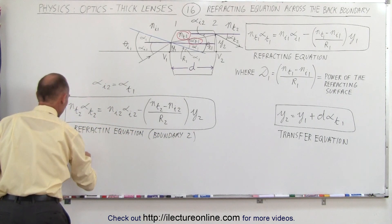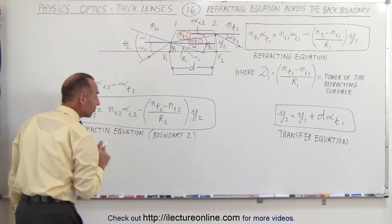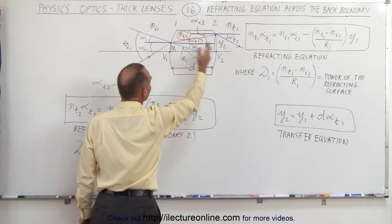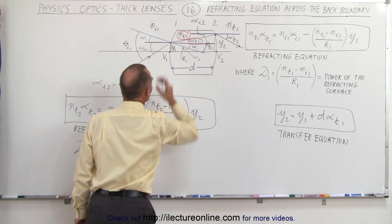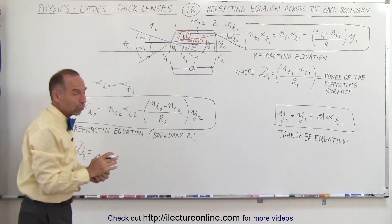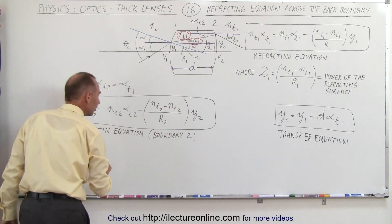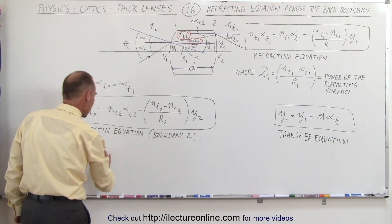Now notice that D2, which now can be considered the power of the refracting surface on the back side of the lens, and it typically will not be the same as what is in front side of the lens. It depends on, of course, the radius of curvature,